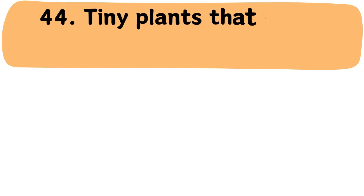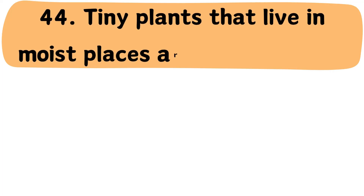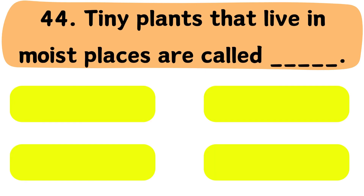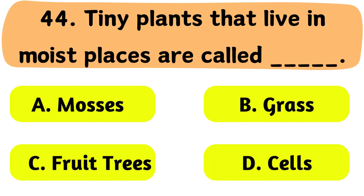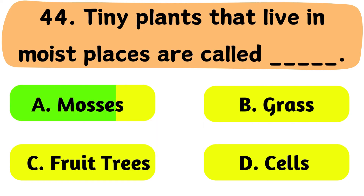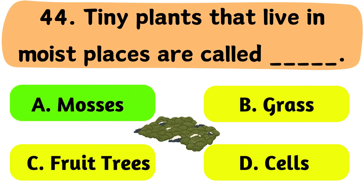Question No. 44: Tiny plants that live in moist places are called what? A. Mosses. B. Grass. C. Fruit trees. D. Cells. The correct answer is Option A: Mosses.